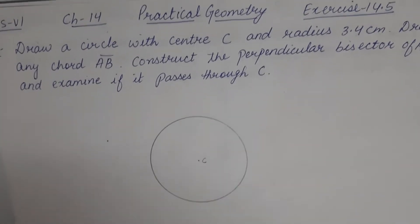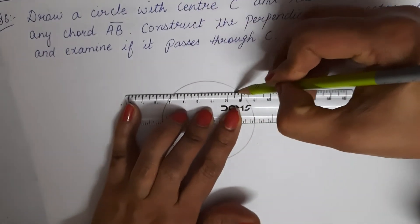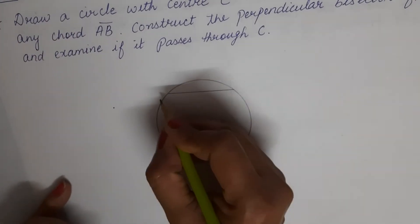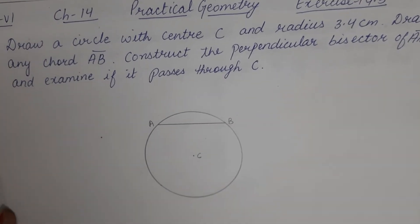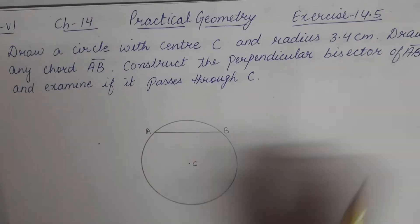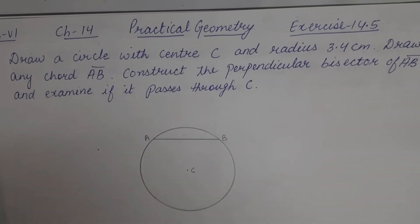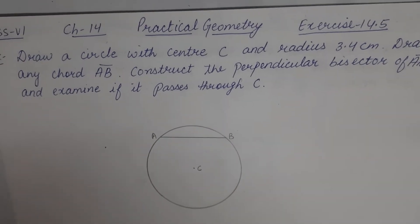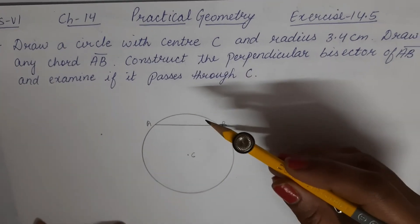Now we have to draw any chord AB — let this be chord AB. Now we need to construct the perpendicular bisector of AB. For that, taking A and B as center and radius more than half of AB, we draw arcs.